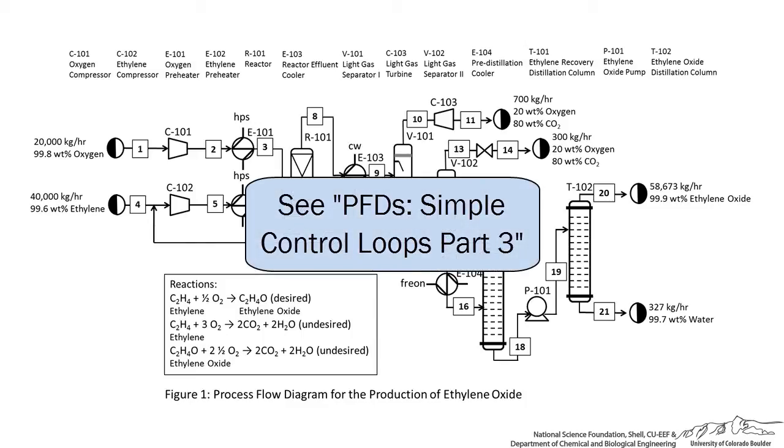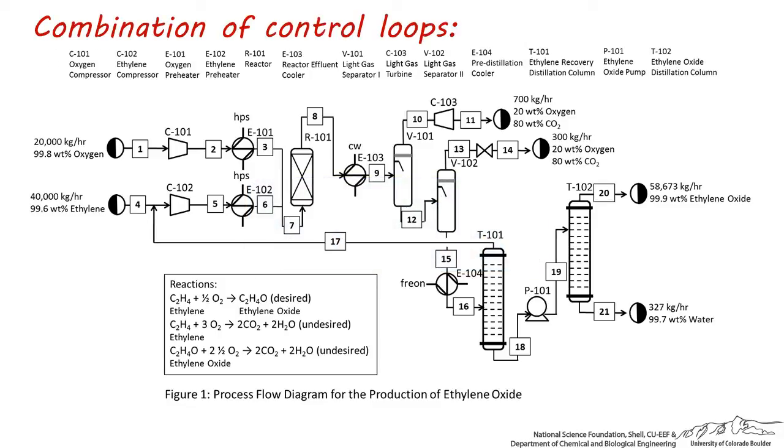Now that we've looked at examples of temperature, pressure, level, and flow rate control loops, let's next look at an example of combining two types of controllers for the same piece of equipment.